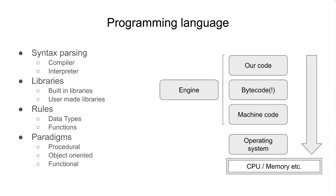Last but not least is functional programming, which is a different type of programming. When we think in terms of mathematical equations, we represent problems as functions. In functional programming, there is no specific state — it cannot hold variables; it is only about functions. When we want to solve a problem, we break it down into functions. That's the overall concept of programming languages. In the next video, we will look at JavaScript — how it actually works. Thank you for watching.